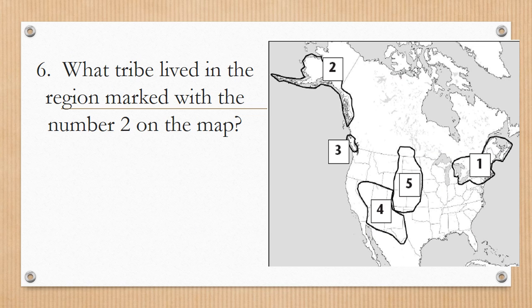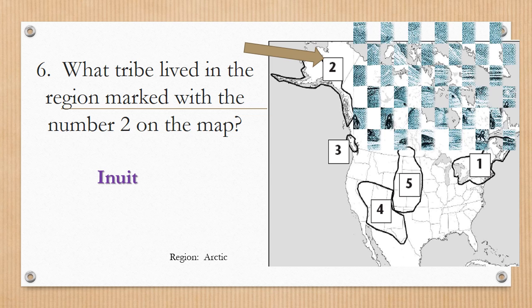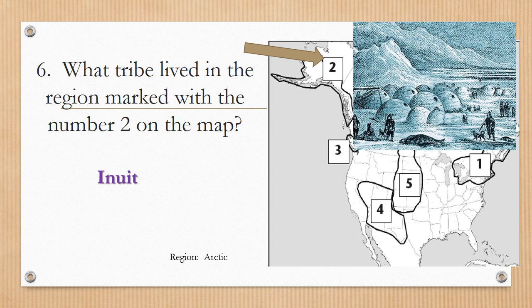Number six: What tribe lived in the region marked with the number two on the map? The answer is the Inuit. The Inuit people lived in the Arctic region, up at the Arctic Circle — very cold in that region, as you can see. The Inuit are the ones who lived in igloos.